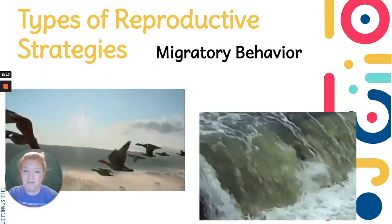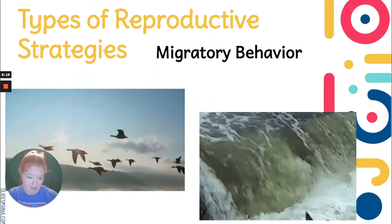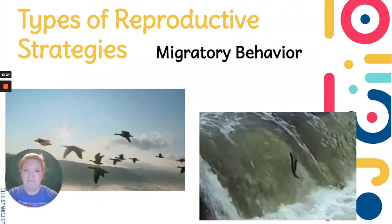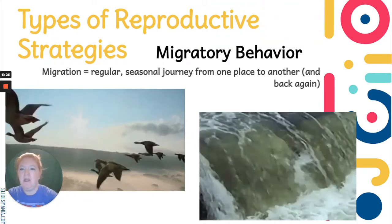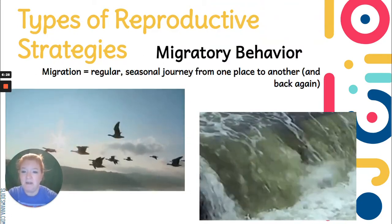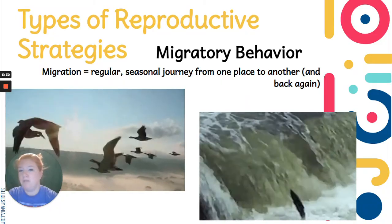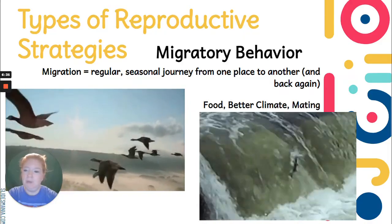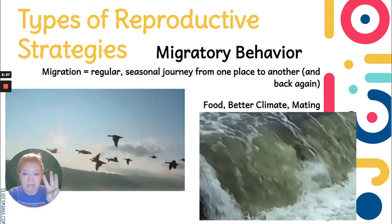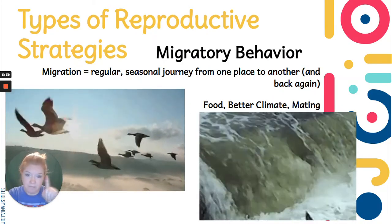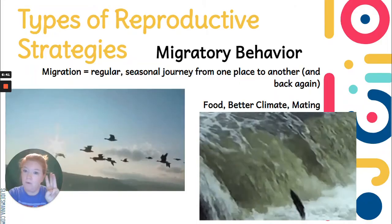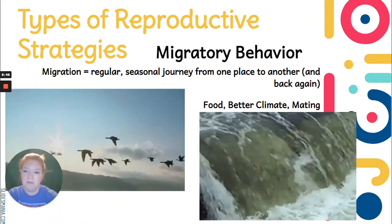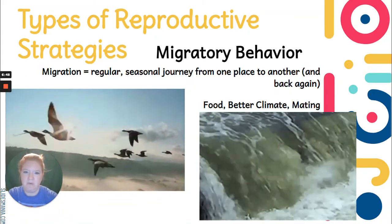Another type of reproductive strategy is migratory behavior. Migration is a regular seasonal journey from one place to another, and then back again when the season changes. Why do animals migrate? Three key reasons: food, a better climate, or for mating. Sometimes it's more than one of those reasons — those are the three reasons that animals would migrate.